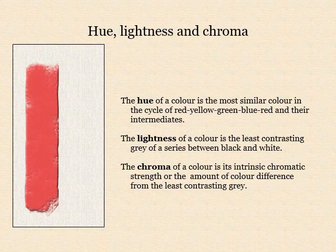The attributes of hue, lightness, and chroma will be familiar to most of us. For the purposes of this talk, these simple definitions will suffice. The hue of a colour is the most similar colour in the cycle of red, yellow, green, blue, red, and their intermediates — in the case of this stripe, a middle red.